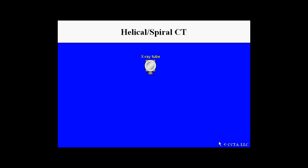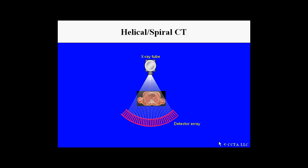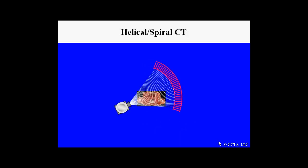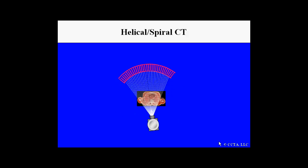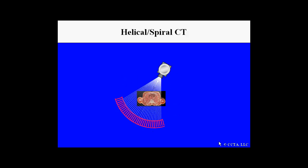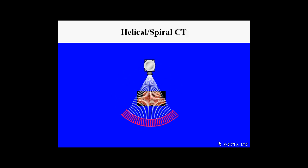There is an x-ray tube which produces a fan-like beam of x-rays, which are incident upon the detector array after passing through the patient. The x-ray source is then spun about the patient to produce data over a total of 360 degrees.